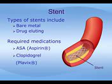A stent procedure follows an angioplasty and involves leaving a small metal mesh tube called a stent in the artery to keep it open. Stents can be bare metal or drug-eluting, which release small amounts of drugs to prevent the artery from closing again. Prior to stent placement and for many months or longer after a stent is placed, two medications are used together to prevent clotting: aspirin and clopidogrel.